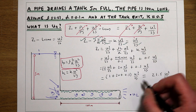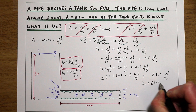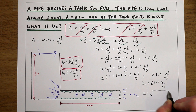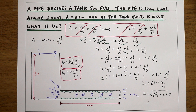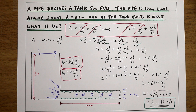After the algebra we have z1 equals 21.5 times u2 squared over 2g. Rearranging for u: u equals the square root of (z1 over 21.5 times 2g). Entering z1 = 5 meters gives a final answer of 2.136 meters per second. That is how we work out the velocity coming out of this pipe when accounting for losses due to friction and local losses at the exit from the tank.